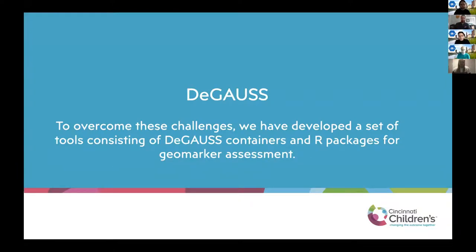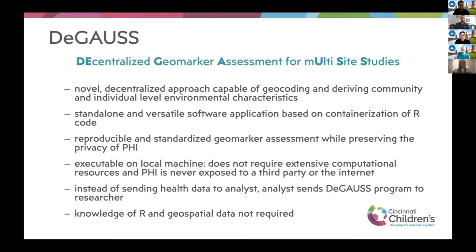To overcome some of these challenges, we have developed a set of tools. The first are these DGAUSS containers, which is the use case of containers that Cole mentioned earlier. We also have some R packages to be used directly in R. DGAUSS stands for decentralized geomarker assessment for multi-site studies. It's a novel decentralized approach where we can geocode and derive community and individual level characteristics. It's standalone software based on containerization, making it reproducible and standardized. We never send PHI to the internet since it's containerized and executable on the local machine.